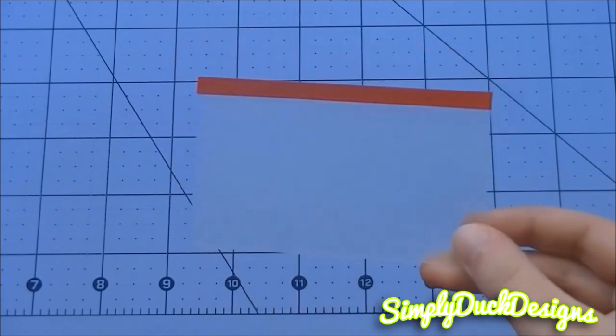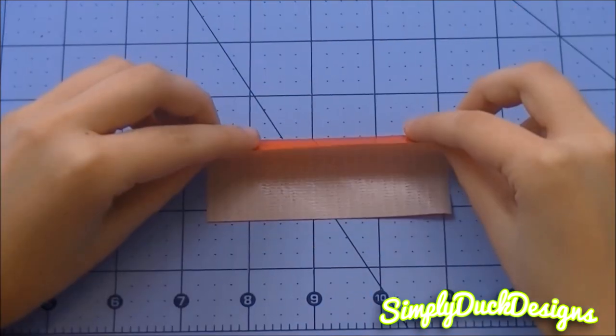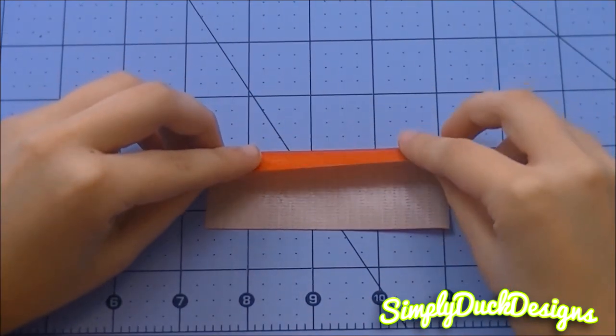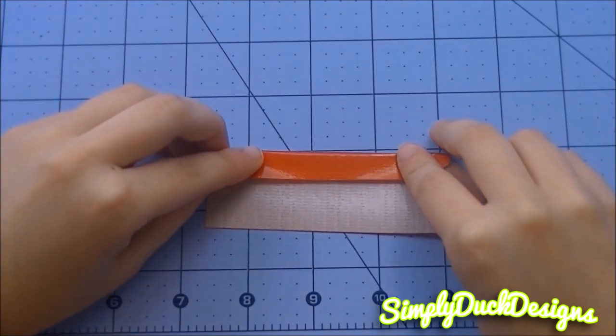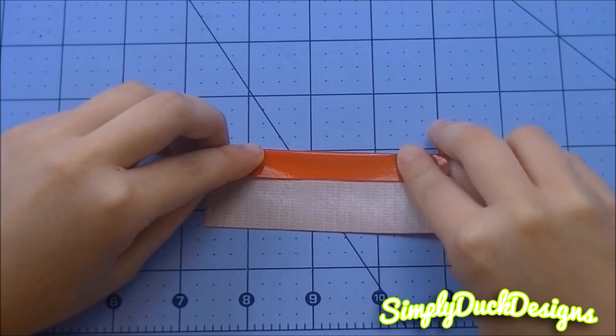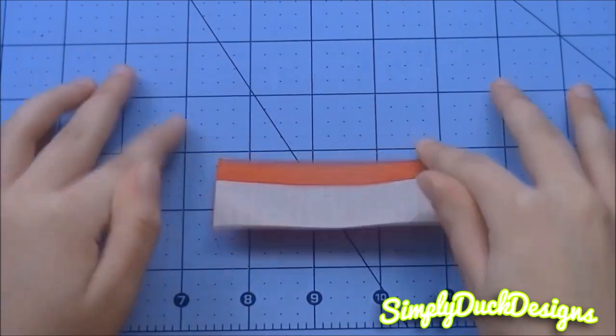Now I'm taking my red duct tape and I'm going to cut that to, once again, 3 3/4 inches long. And basically you just fold it to your desired length. I don't really do a specific measurement. I just kind of fold it down to where it looks right to me. Then you're just going to flatten that down.